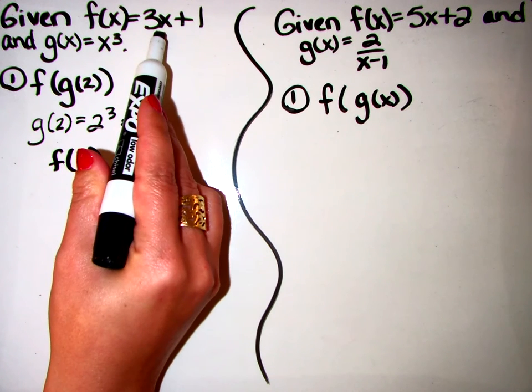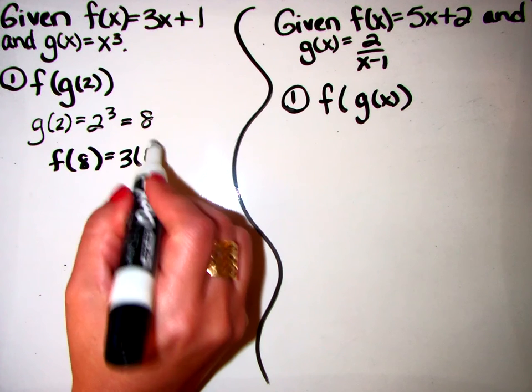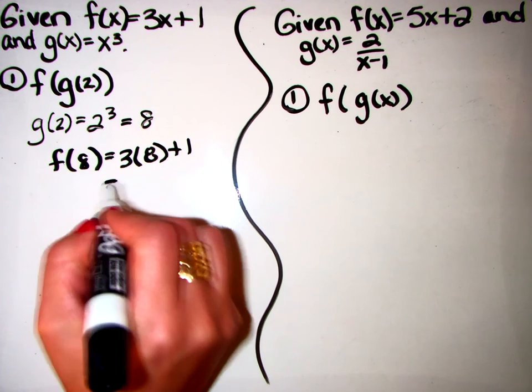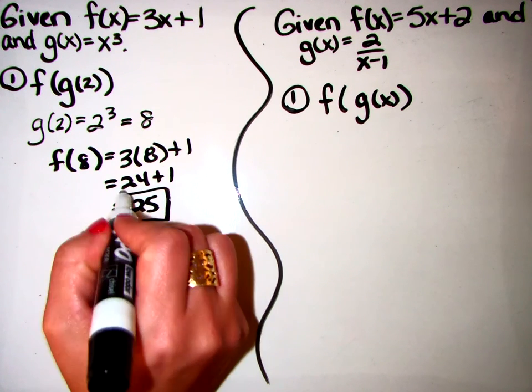Which means I'm going to go up here and put in an 8 for my x. I get 24 plus 1 and that is equal to 25.